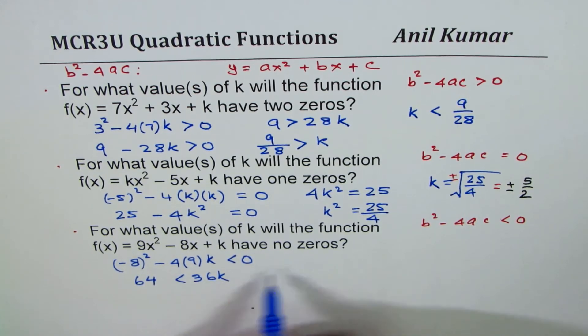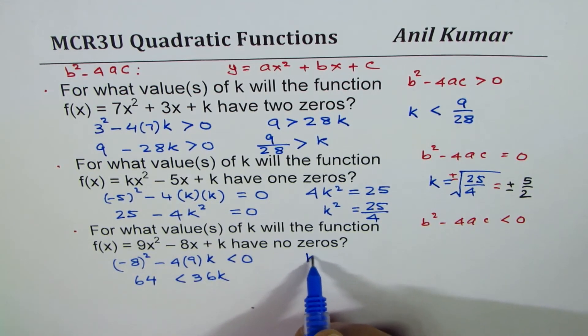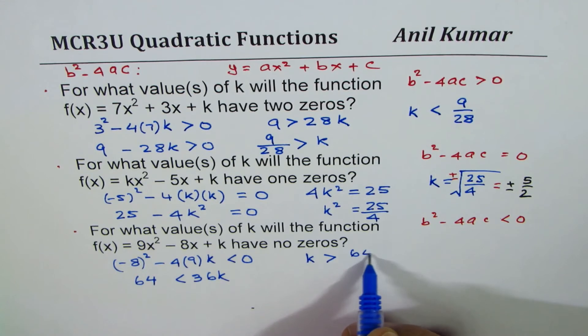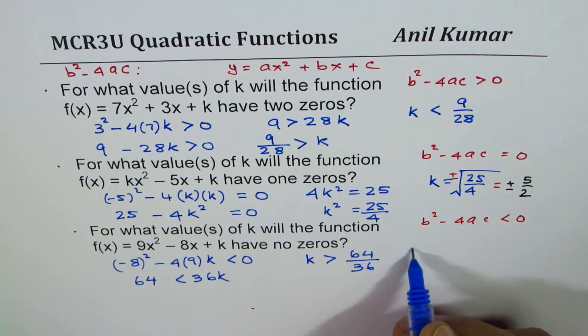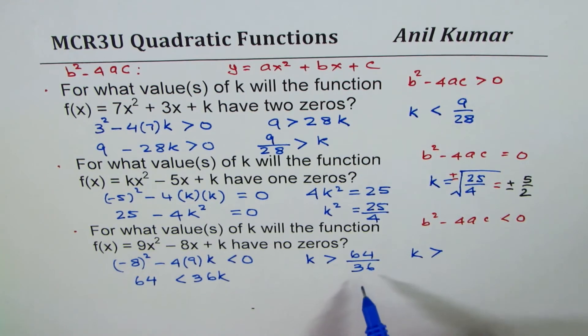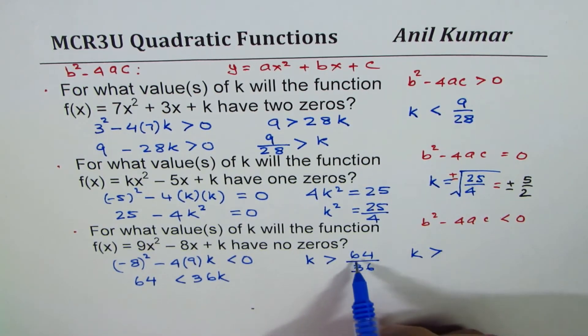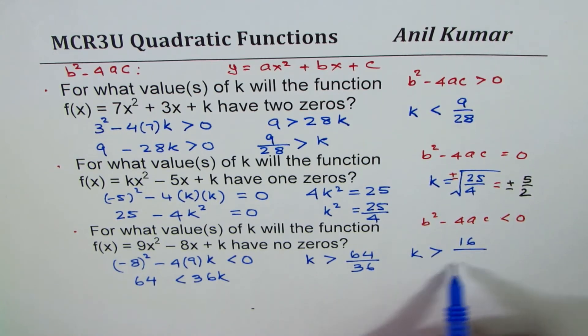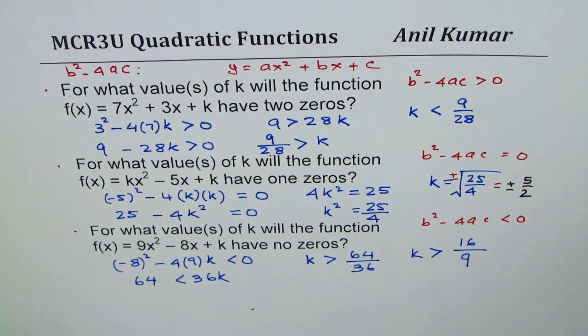Now solving for k we can say k is greater than 64 over 36. Or we can simplify by dividing both by 4, so k is greater than 16 over 9.